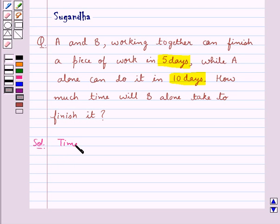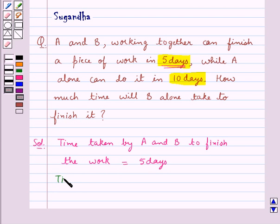Now time taken by A and B together to finish the work is equal to 5 days. Then time taken by A alone to finish the work is equal to 10 days.